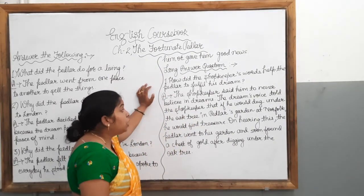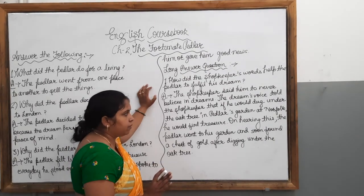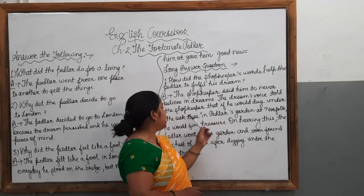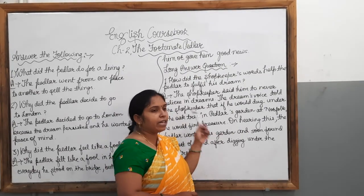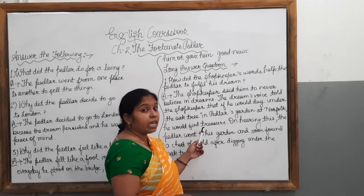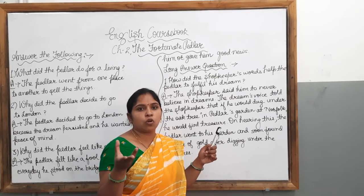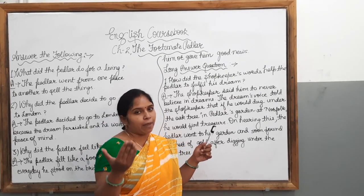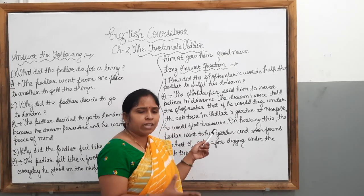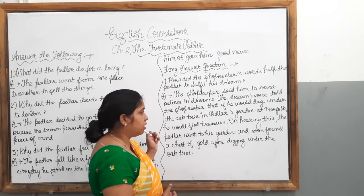The shopkeeper said to never believe in dreams. The dream's voice told the shopkeeper that if he got dug under the oak tree in the pedlar's garden at Swaffham, he would find treasure. Treasure means valuable things, the precious things, the gold ornaments, the diamond things, gold coins, silver coins, diamond ornaments. So these things were there in the treasure.